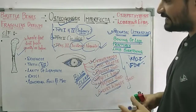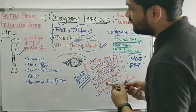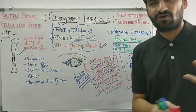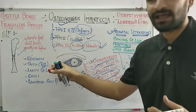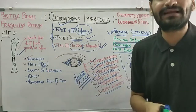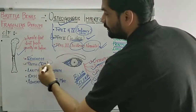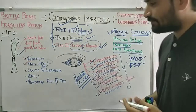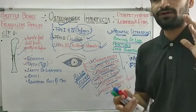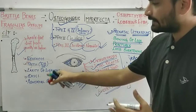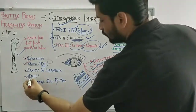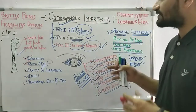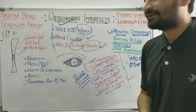Other clinical features include deafness due to otosclerosis, defects of the teeth similar to dentinogenesis imperfecta or hereditary opalescent dentine, laxity of ligaments, a peculiar shape of the skull due to abnormal bone remodeling, and abnormal electrical response of muscles. These are the common clinical features; we will next study types 1 through 4 separately.